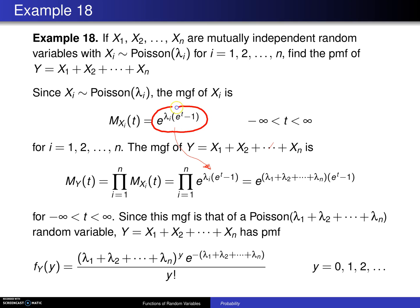And notice that it has the same type of form, but this time lambda i is replaced with lambda 1 plus lambda 2 all the way up to lambda n. So this moment generating function is that of a Poisson random variable whose parameter is the sum of the individual lambda i's.